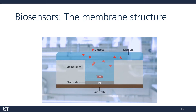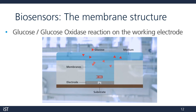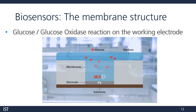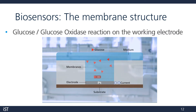Let's have a closer look at the glucose reaction over the working electrode. Here, we can see our semipermeable membrane layers. The glucose oxidase is immobilized above the platinum electrode. The glucose passes through the membrane layers and reacts with the glucose oxidase, letting off hydrogen peroxide and generating a small current when in contact with the platinum electrode.